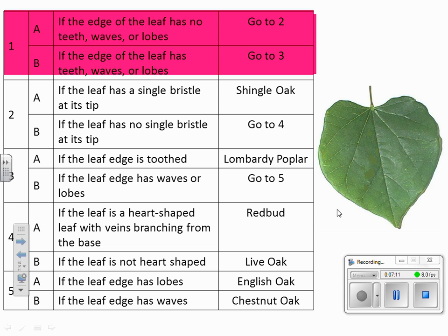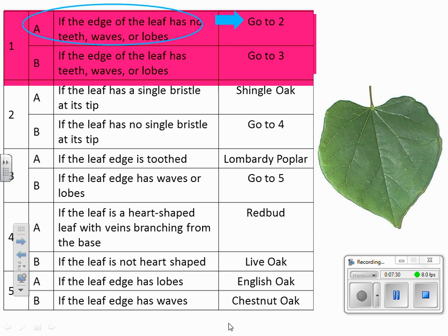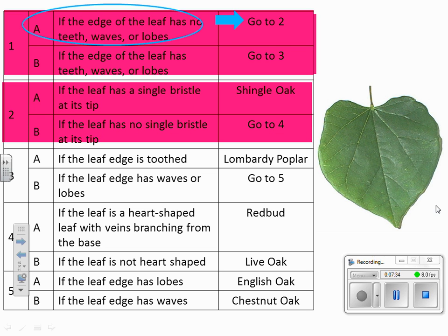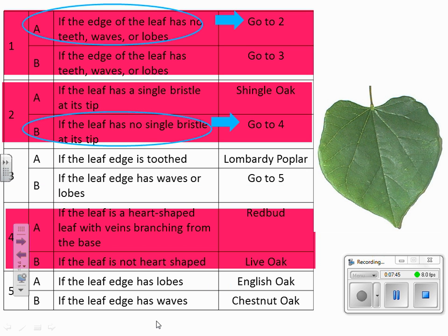Let's try one more with a new leaf using the same dichotomous key. Starting at question one again: the edge looks pretty smooth, so it does not have teeth, waves, or lobes — we go to question two. If the leaf has a single bristle at its tip — I look at the end and don't see an extension — so no single bristle; we go to question four. If the leaf is heart-shaped — it does kind of look like a heart — and the veins are branching from the base. I agree with that, so it's going to be named a redbud. This actually comes from a redbud tree.